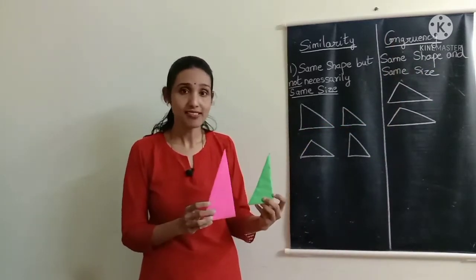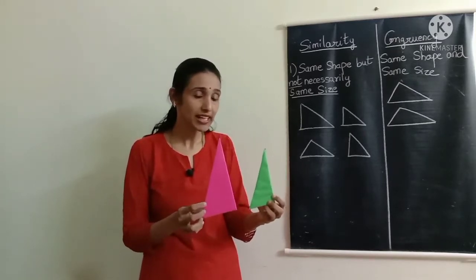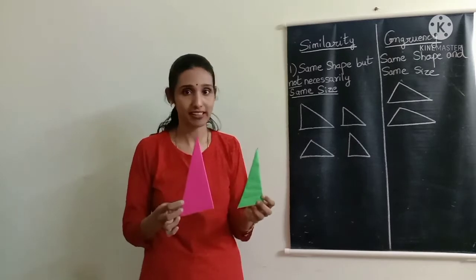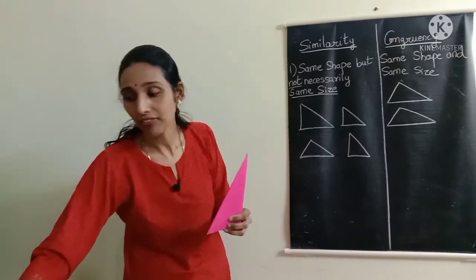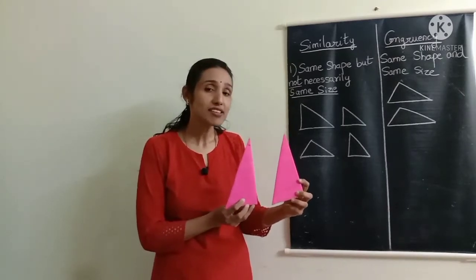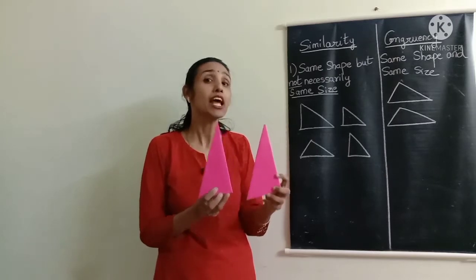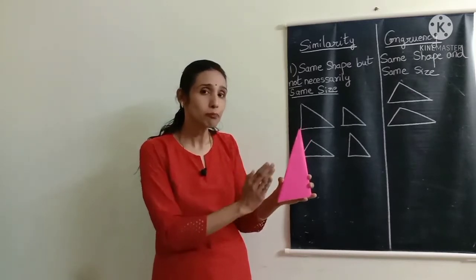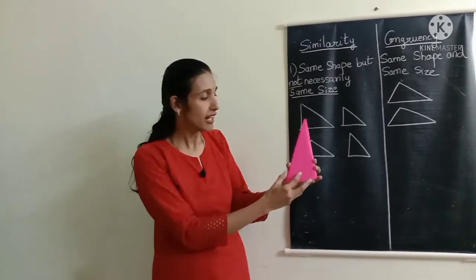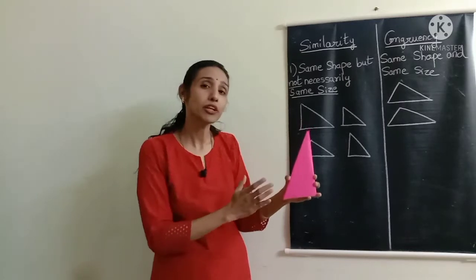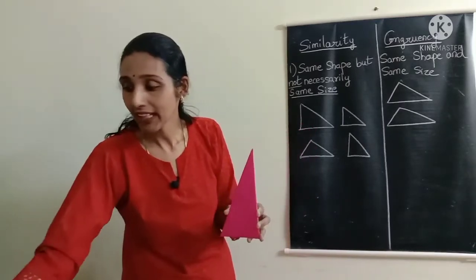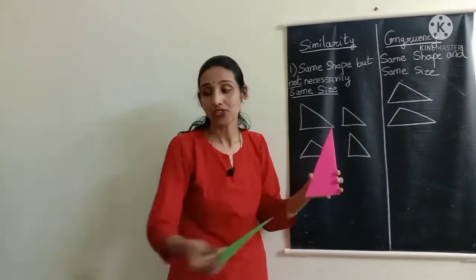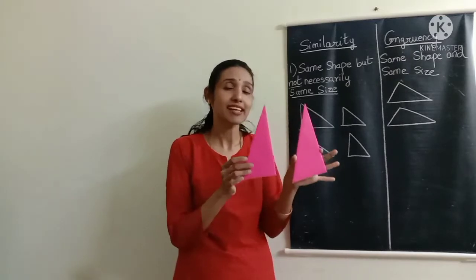Here I have two triangles that have the same shape but not the same size — so they are similar triangles. On the other hand, if two triangles have the same shape and the same size, they will be congruent triangles. If I superimpose the congruent triangles, they exactly match and fall one on top of the other — this is a property of all congruent figures. Whereas with similar triangles, if I superimpose them they don't exactly match. So congruent figures are like carbon copies — they are exactly identical.